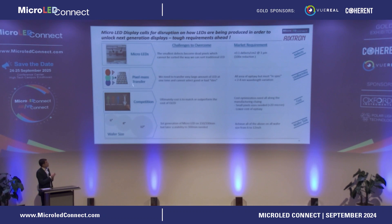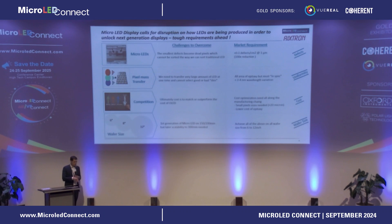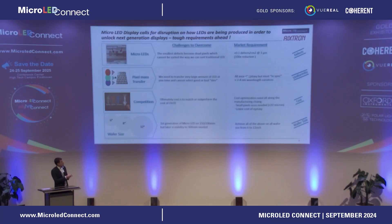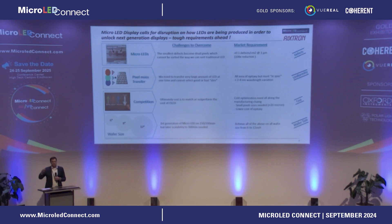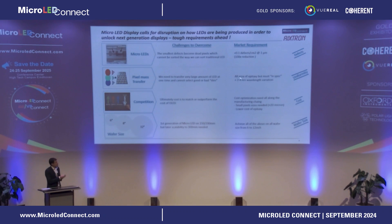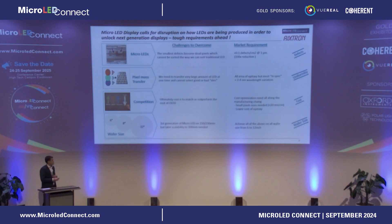For the wafer transfer or pixel transfer, a key aspect is getting uniformity down. Of course, we want cost, but these two are pretty well correlated. If you have to do a lot of steps to account for non-uniformity in a wafer, that builds cost into the system. If we can deliver low cost, very good wavelength uniformities, then I think solutions going forward can really deliver what's needed.